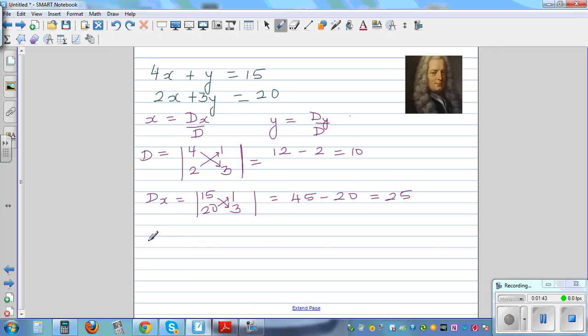Okay, and finally dy. This is a very useful method when you have to have some very untidy answers. For dy, you write the coefficients of x, so that is 4 and 2. You don't write the coefficient of y, but you write the constant in place of that. So 15, 20. And then you cross multiply and take away. 4 times 20 is 80 minus 30, which is 50.